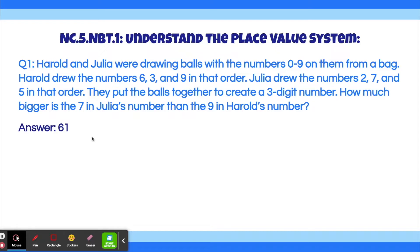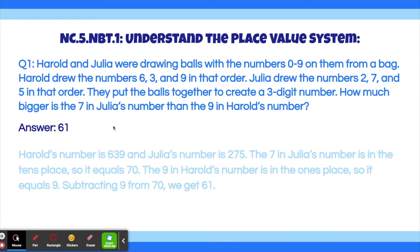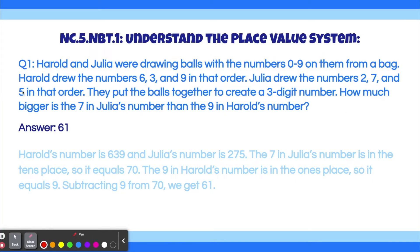If you got this correct, feel free to skip to the next question. Harold's number is 639 since he drew the numbers 6, 3, and 9 in that order. Julia's number is 275 since she drew the numbers 2, 7, and 5 in that order. The 7 in Julia's number is in the tens place, which means it equals 70. The 9 in Harold's number is in the ones place, so it equals 9. Subtracting 9 from 70, we get 61, which is our answer.